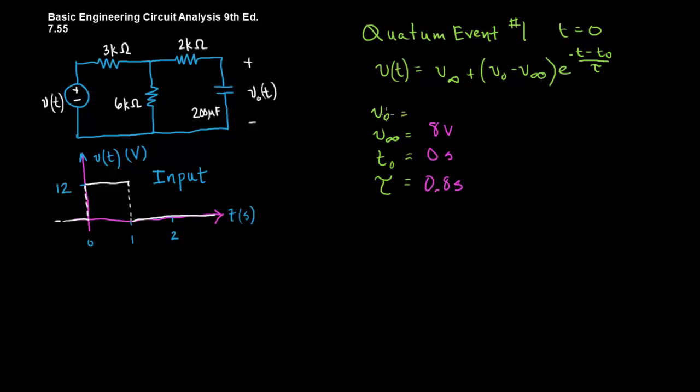What is the voltage at 0? Well, this thing has been connected to 0 volts for all time, so no voltage is built up on the capacitor, so it's 0 volts. We can now use this information to write our equation. V of T equals 8 minus 8E to the minus 1.25 T. And I got minus 1.25 by dividing, by taking the reciprocal of tau.